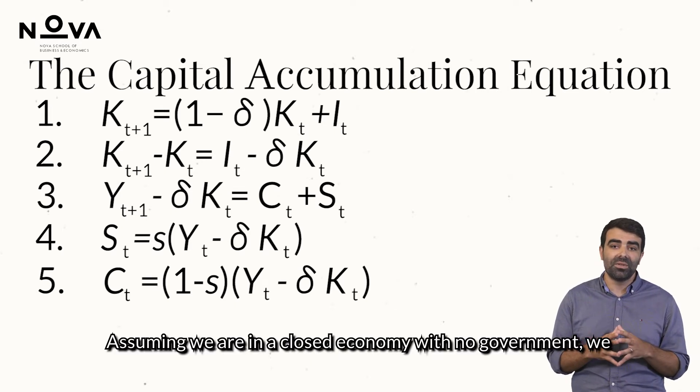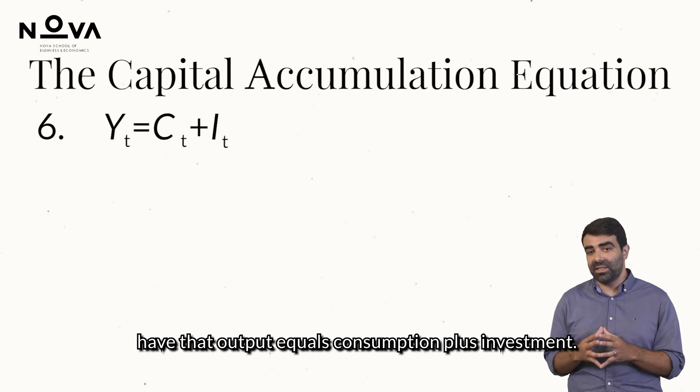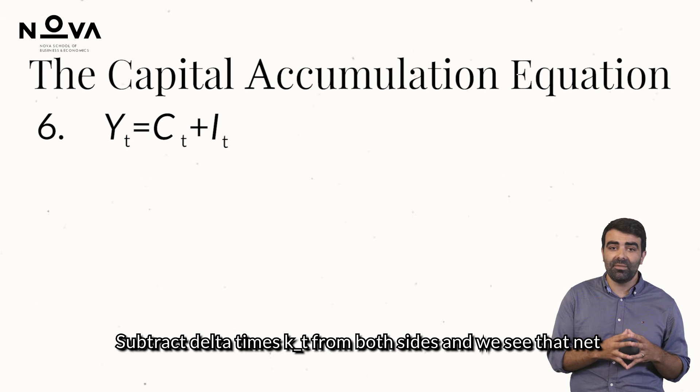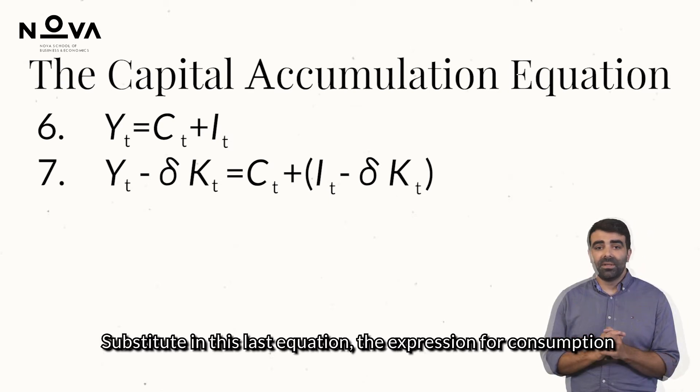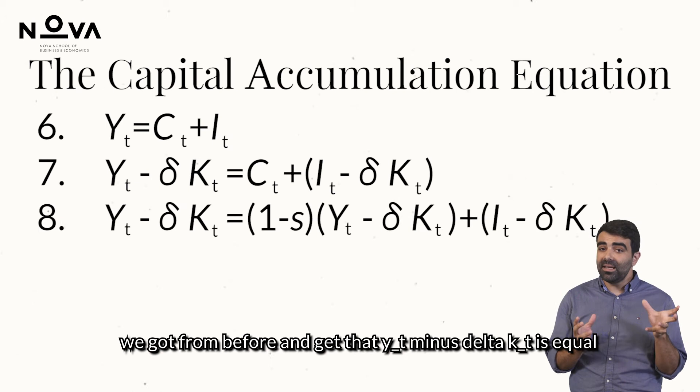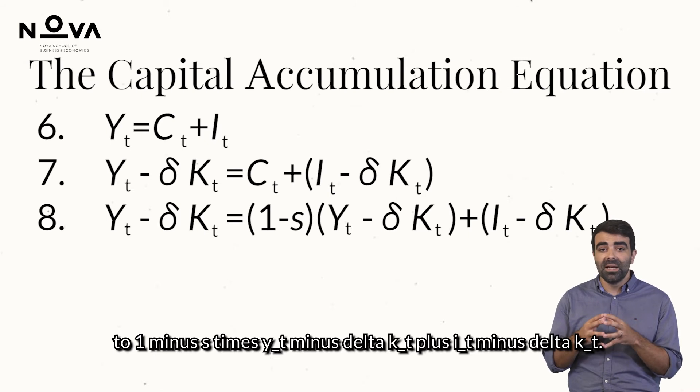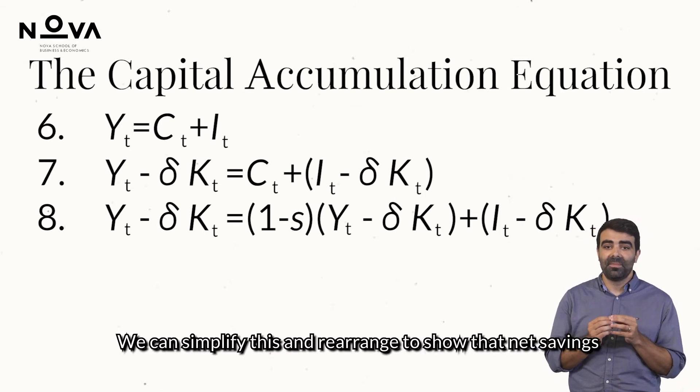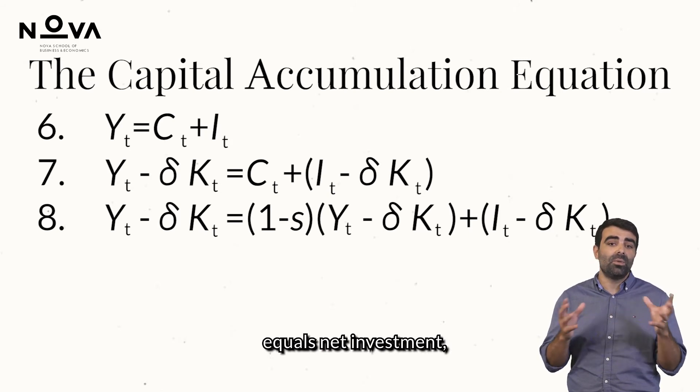Assuming we are in a closed economy with no government, we have that output equals consumption plus investment. Subtract delta times kt from both sides and we see that net production will be used either as consumption or as net investment. Substitute in this last equation the expression for consumption we got from before and get that yt minus delta kt is equal to 1 minus s times yt minus delta kt plus it minus delta kt.